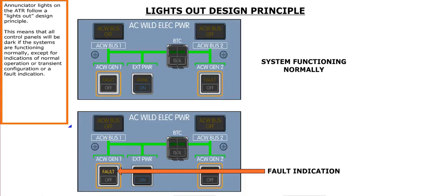Annunciator lights on the ATR follow a lights-out design principle. This means that all control panels will be dark if the systems are functioning normally, except for indications of normal operation or transient configuration, or a fault indication.